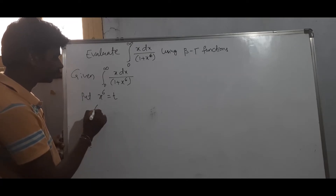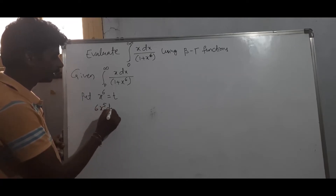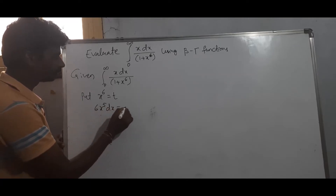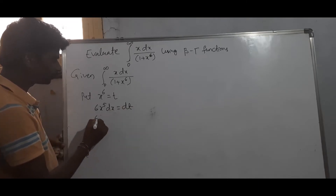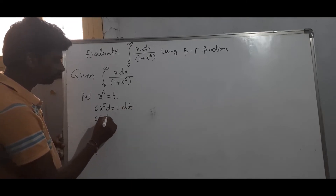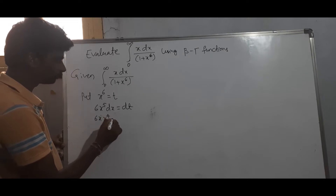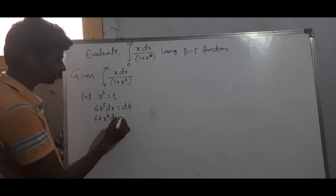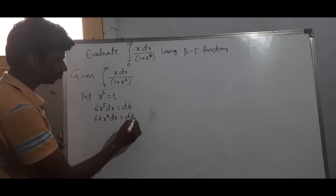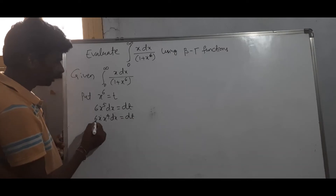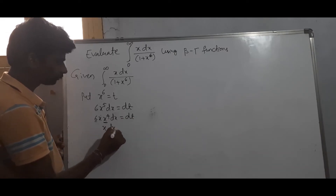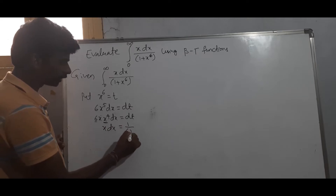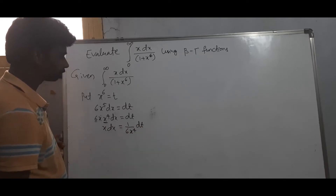Now taking the derivative: 6 x to the power 5 dx equals dt. Therefore dx equals dt divided by 6 x to the power 4. So x dx equals (1 divided by 6 x to the power 4) times x dx.